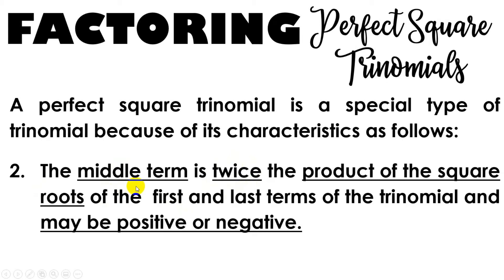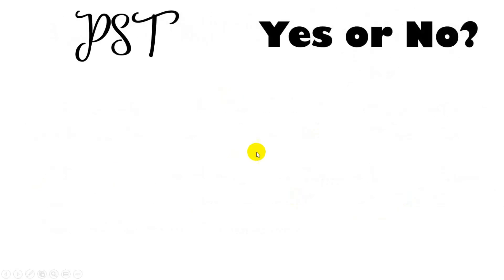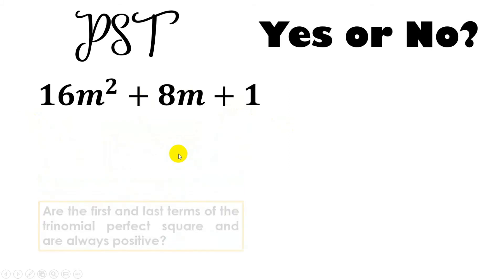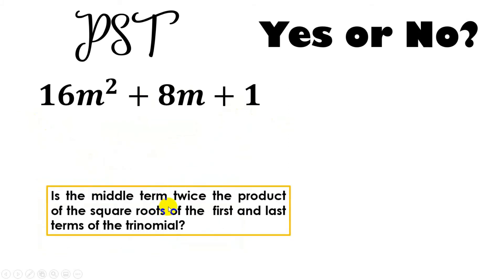Let us determine the following trinomials, whether it is a PST or not. We have here 16m squared plus 8m plus 1. Are the first and last terms of trinomial perfect square and are always positive? Do the first and last term have square roots? The answer is yes. And are they both positive? The answer also is yes.